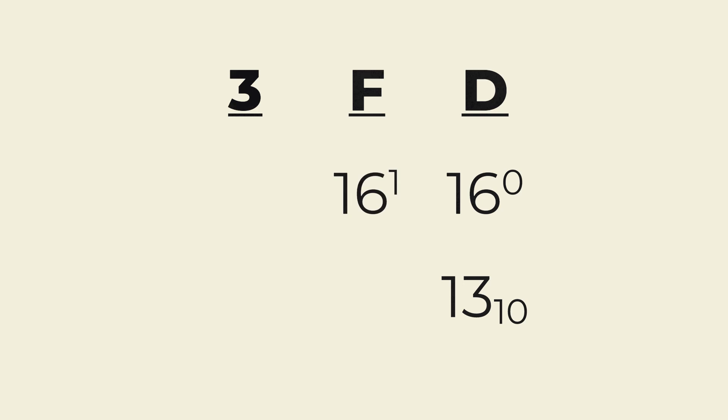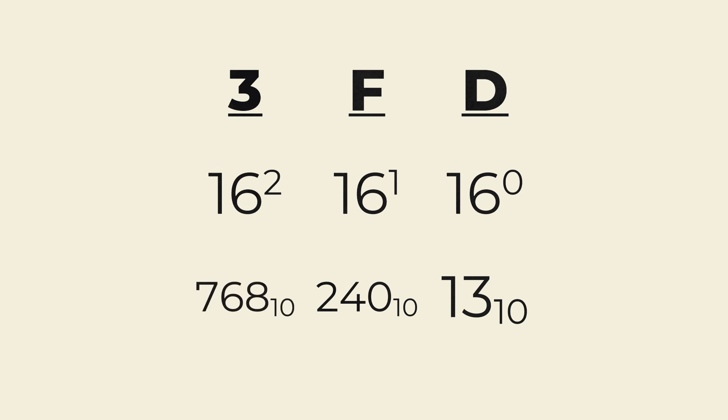Now, we'll look at an example from hexadecimal. In the number 3FD in hexadecimal, D is in the 1 spot, because the first power of 16 is 16 to the 0th power, which is 1. D represents 13, and 13 times 1 is 13, so 13 gets added to the total. Next, F is in the 16th spot, because the second power of 16 is 16. F, which is 15, times 16 is 240, so 240 gets added to the total. Last, 3 is in the 256 spot, because the third power of 16 is 256. 3 times 256 is 768, and that gets added to the total, which would be 1021 in base 10.